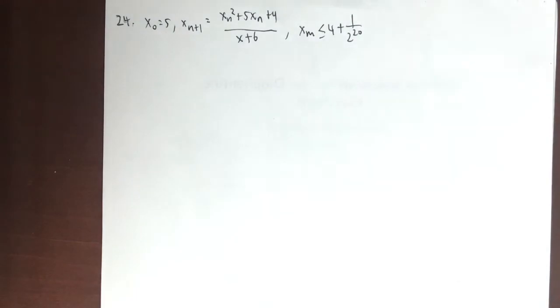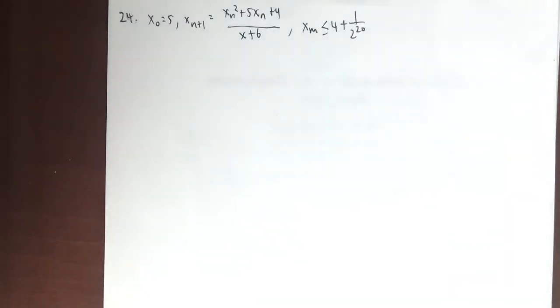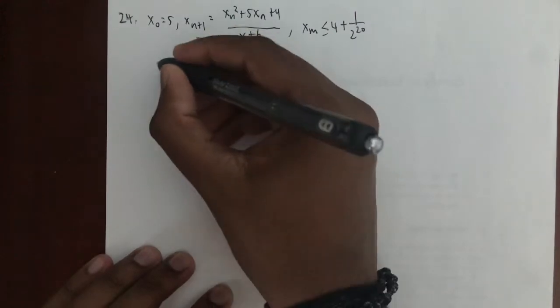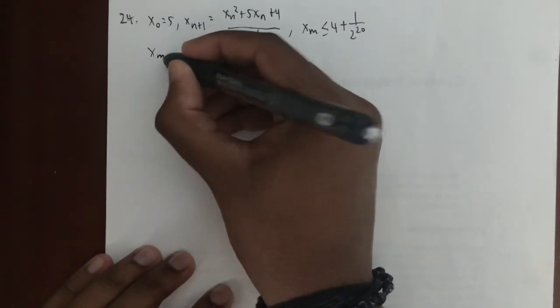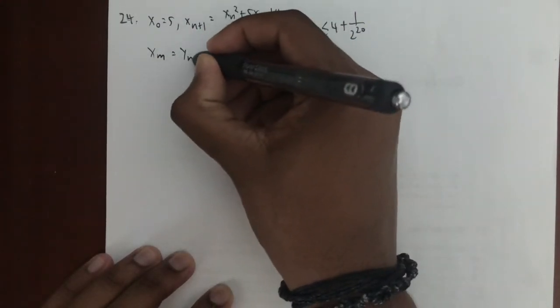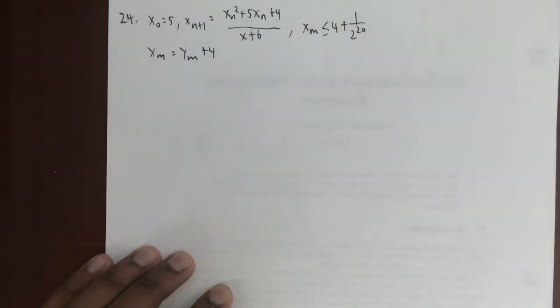So this is how we'd solve the problem. First, we can start off by just writing out the important information, which is pretty much just the three given expressions. From here, I see that x_m ≤ 4 + 1/2^20 seems kind of annoying. The most annoying part is the 4, so I want to make a substitution to get rid of that 4. We're going to say x_m = y_m + 4, or you can say x_n, it doesn't make a difference.